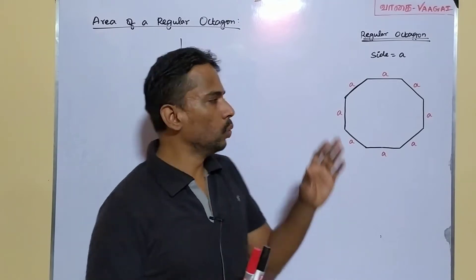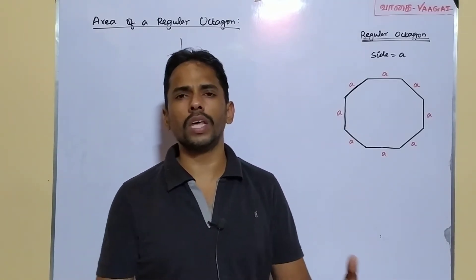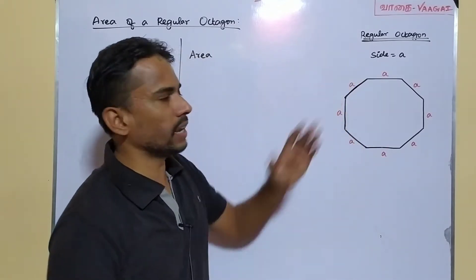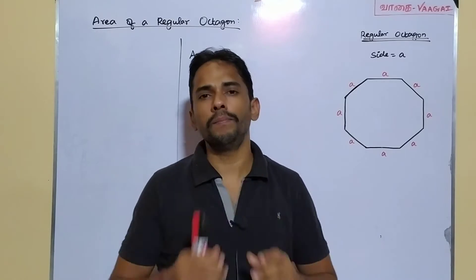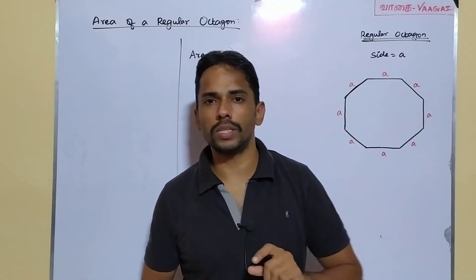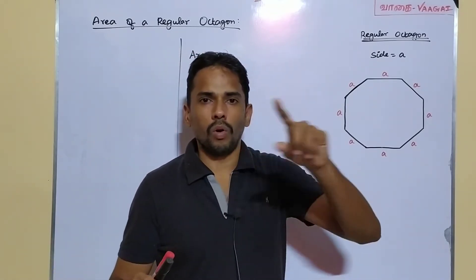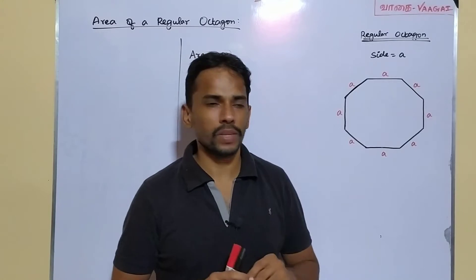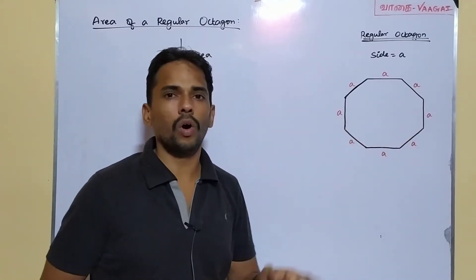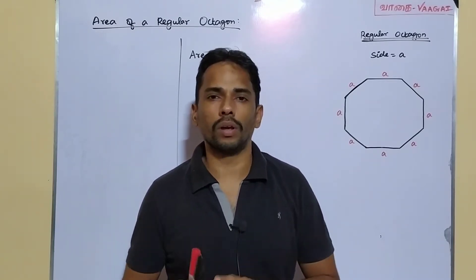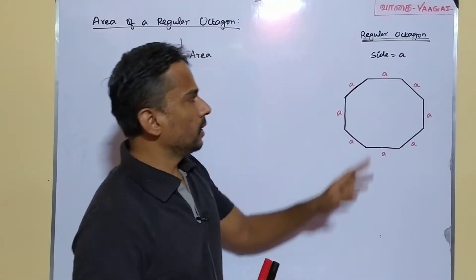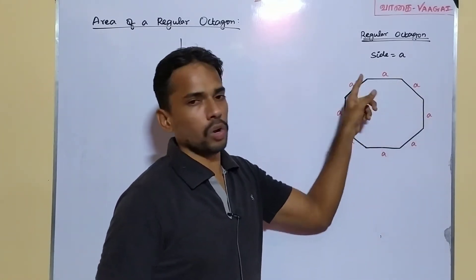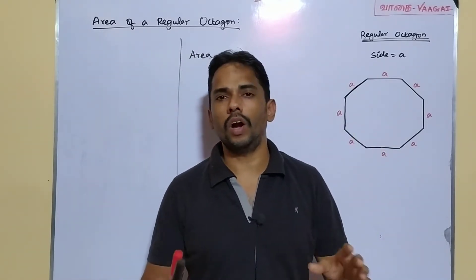Here we have a regular octagon whose area we are going to find. What is an octagon? An octagon is a polygon having eight sides. What makes it a regular octagon? When all eight sides are equal in length and all eight interior angles are also equal, we end up with a regular octagon. Here we have taken each side of this regular octagon to be 'a'.